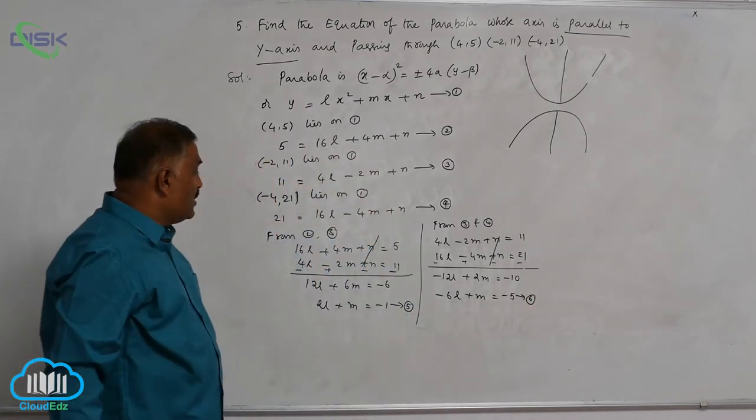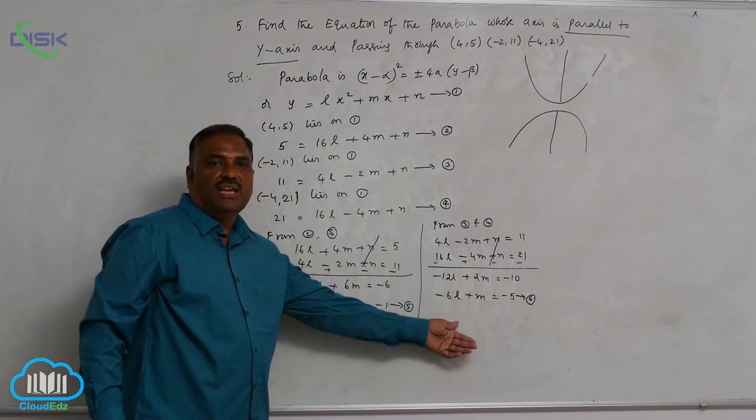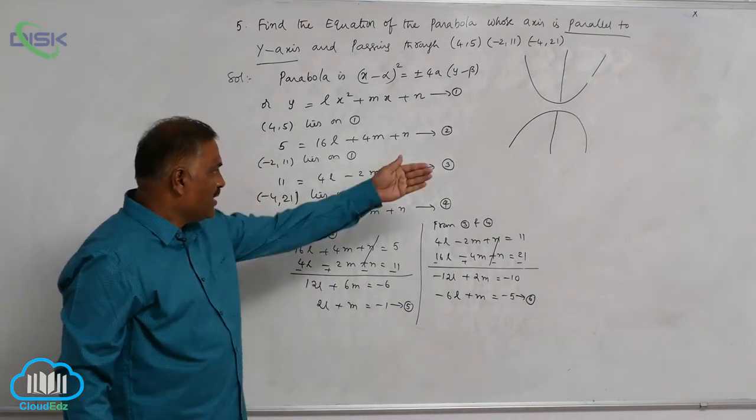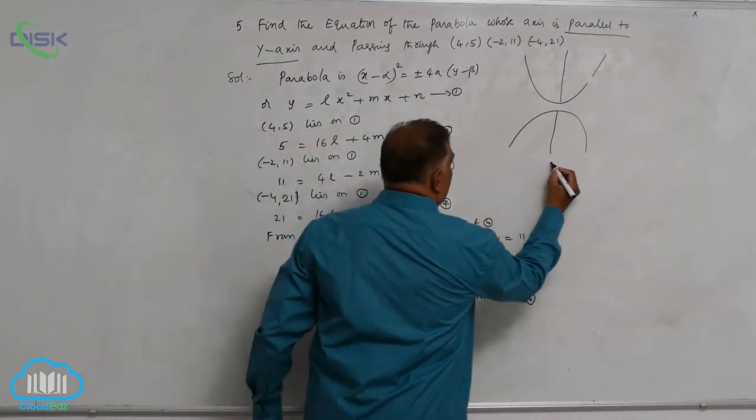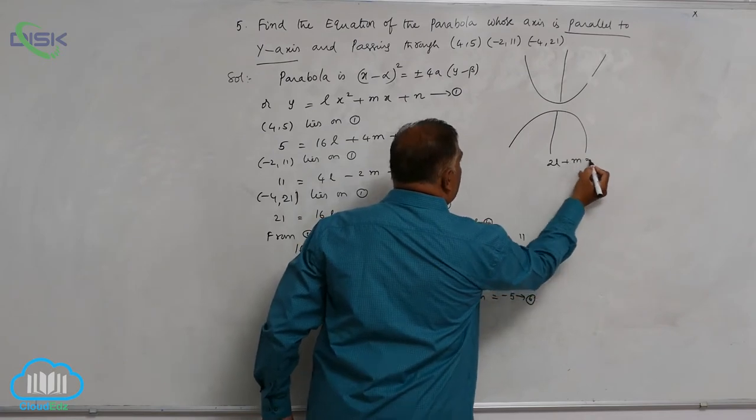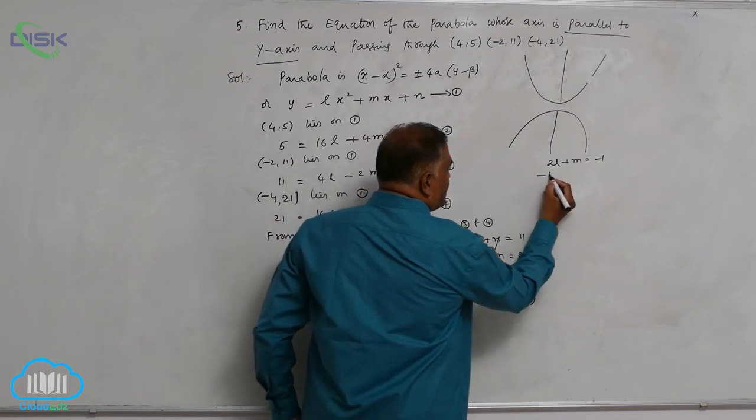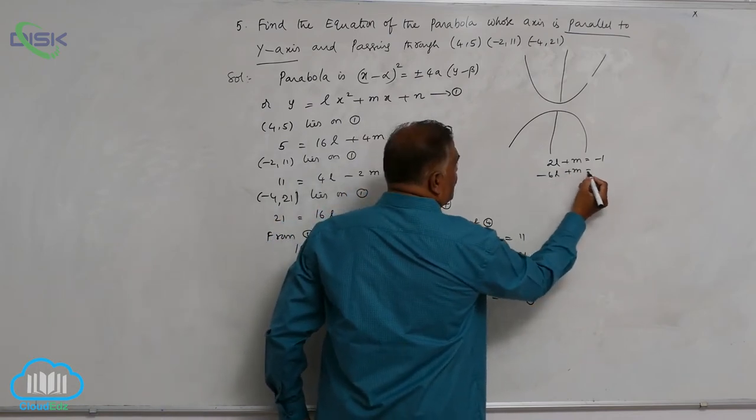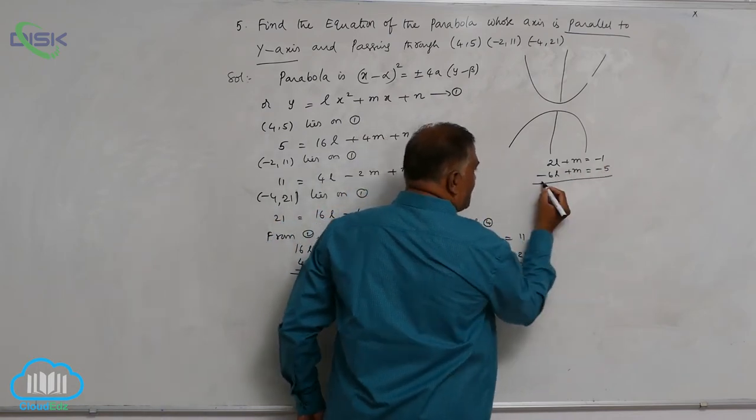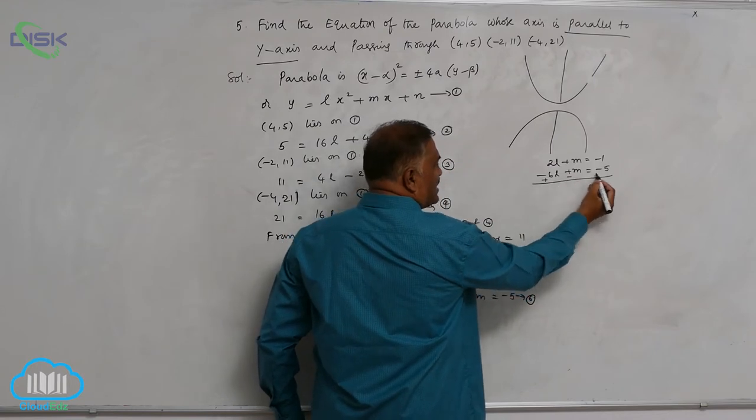Now we need to simplify equations 5 and 6. Let us consider here, 2l plus m is equal to minus 1, and minus 6l plus m is equal to minus 5. Take again subtraction.